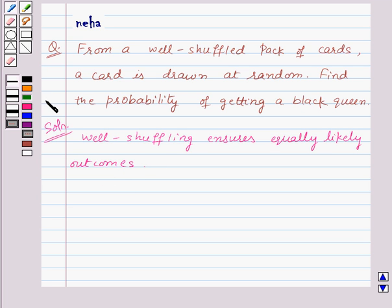Now we need to find out the probability of getting a black queen. So let us assume that E is the event of getting a black queen.